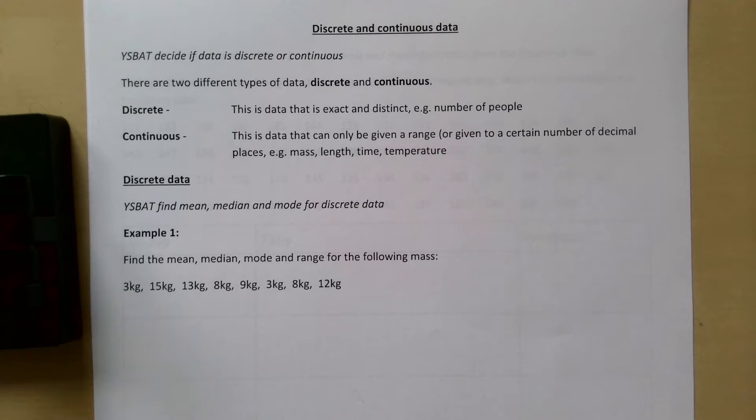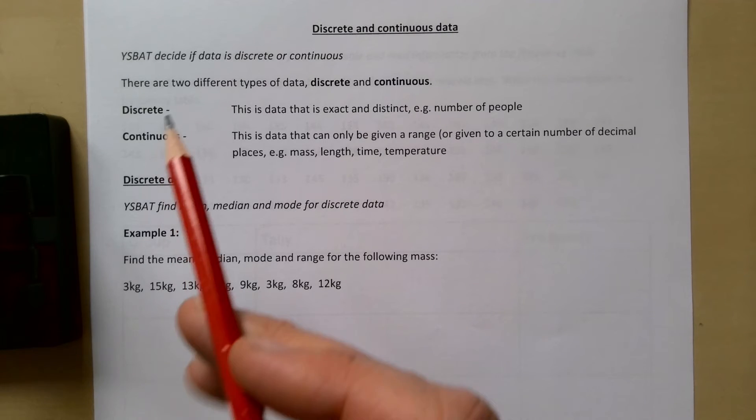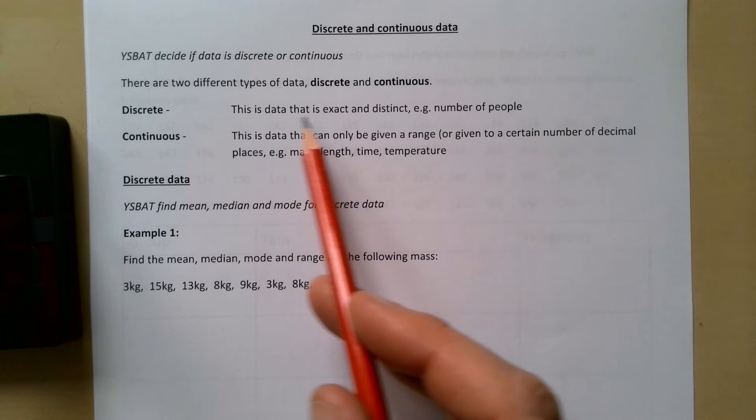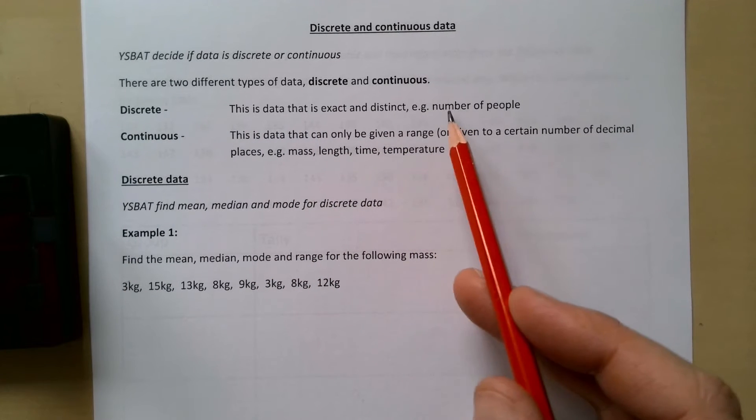Okay, we are on Year 9 notes somewhere in Unit 2, just looking at discrete and continuous data. There are two different types of data: discrete and continuous. Discrete is data that is exact and distinct, for example the number of people.